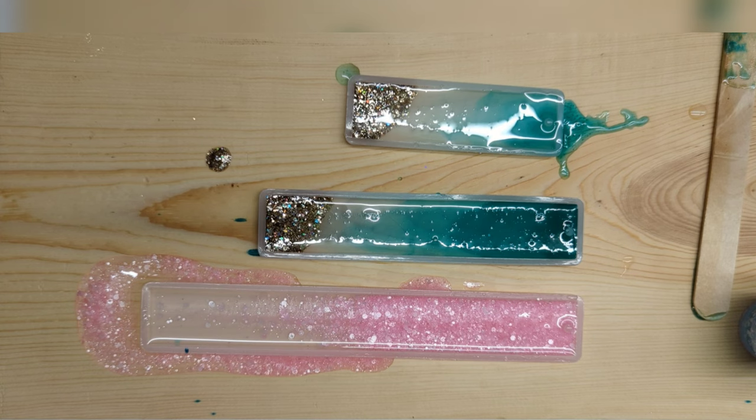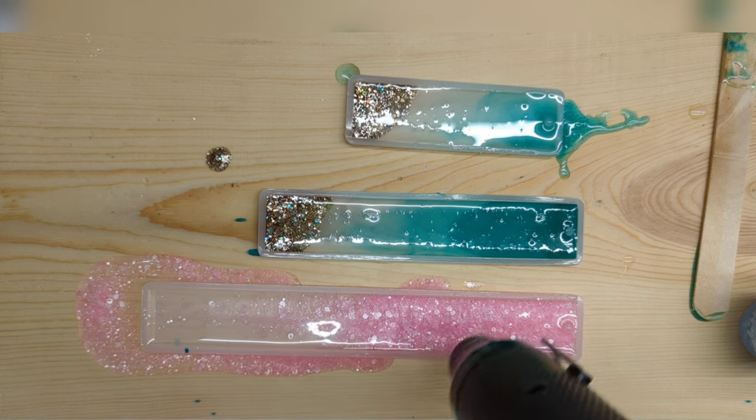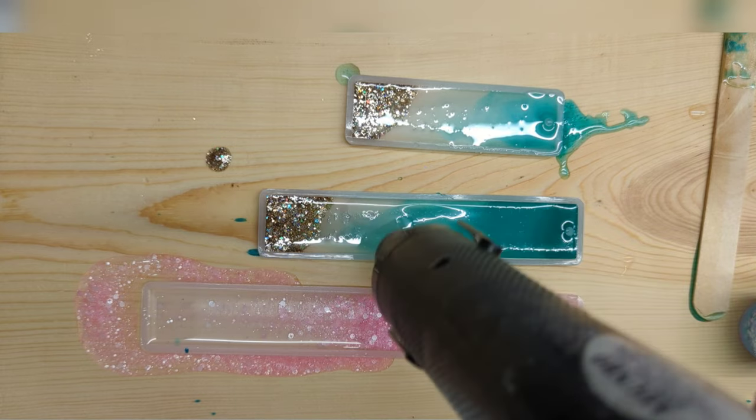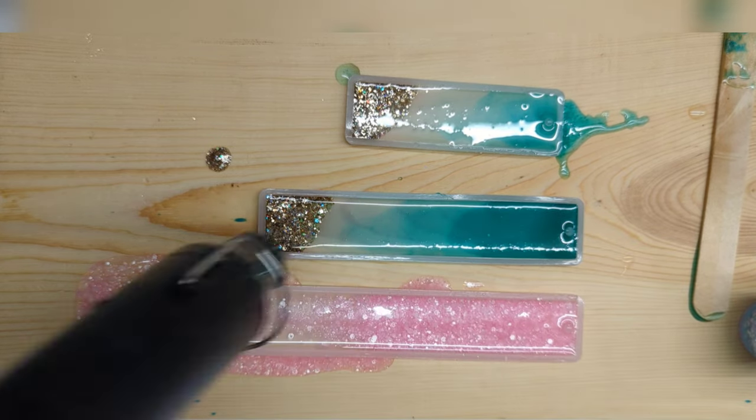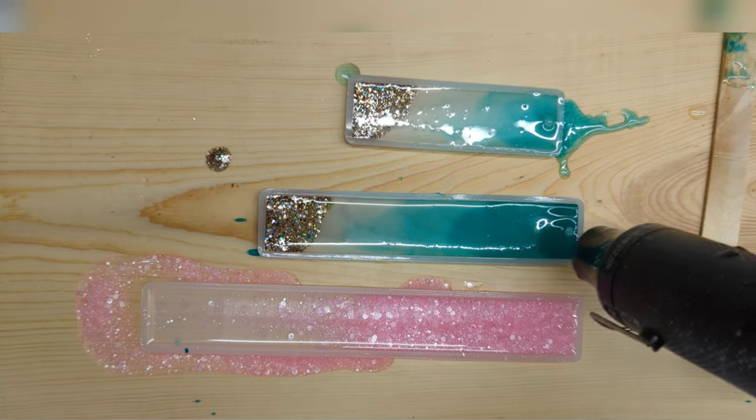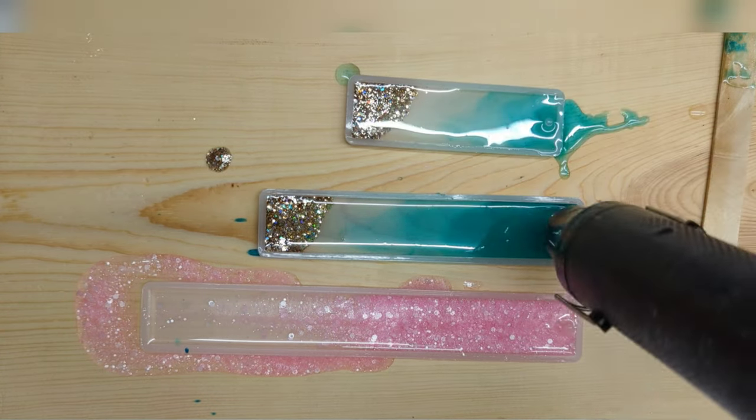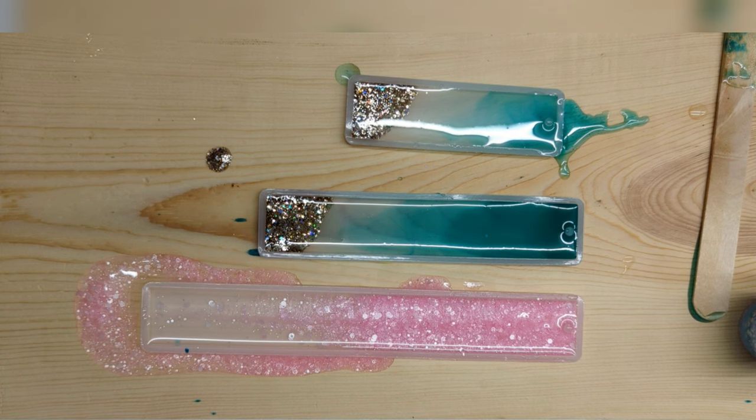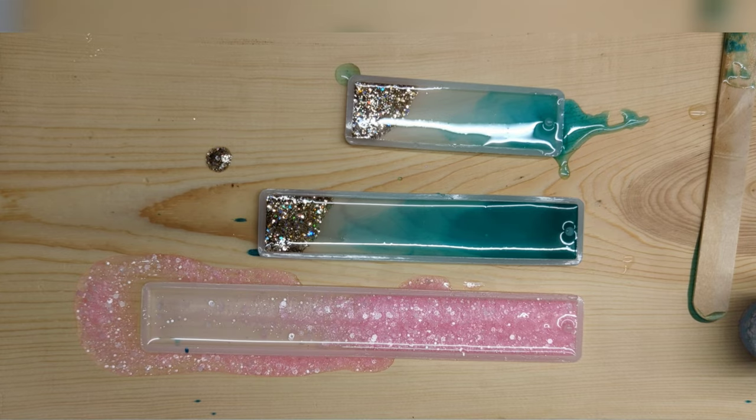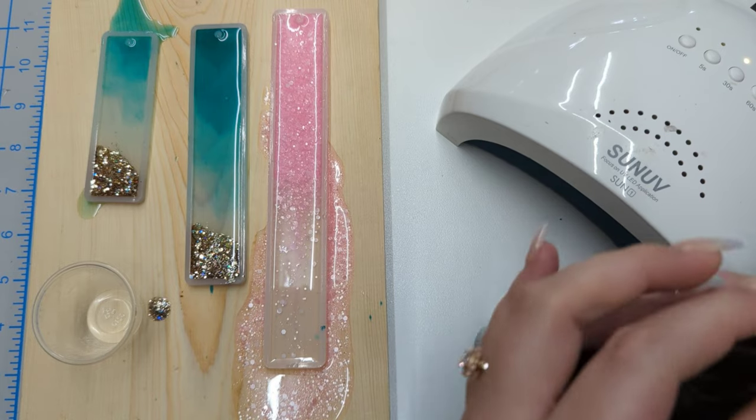I'm then going to come in with my heat gun on the lowest setting and really get in there and pop those air bubbles. I don't want to use a torch because the torch will risk melting your silicone mold. I'm just kind of maneuvering these alcohol ink colors and really popping all of those bubbles so we get a nice flawless finish. We're going to let these cure overnight and then we'll come in to the second process.